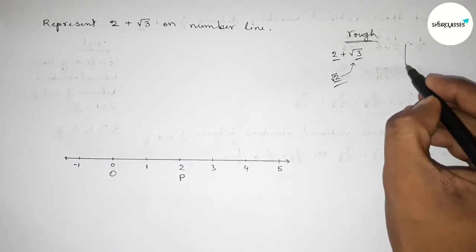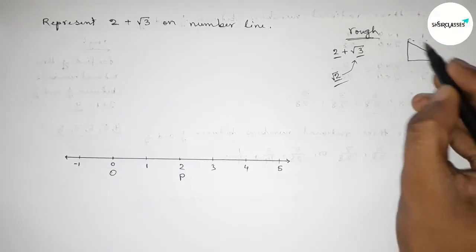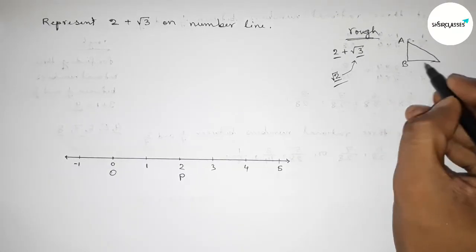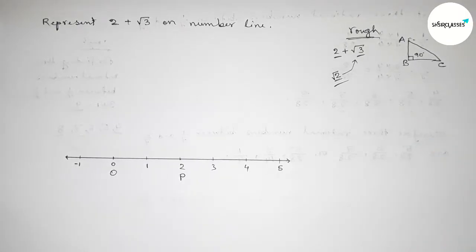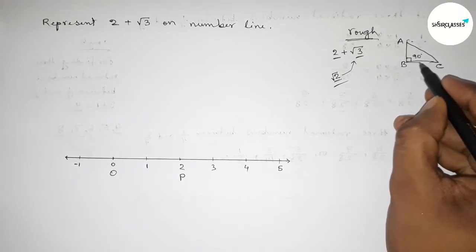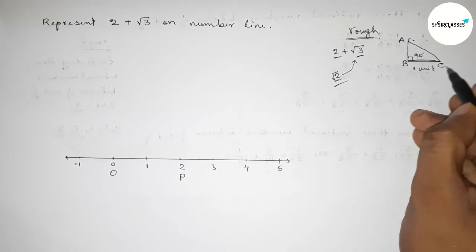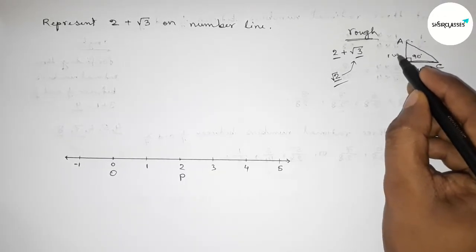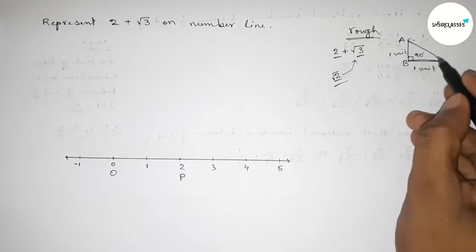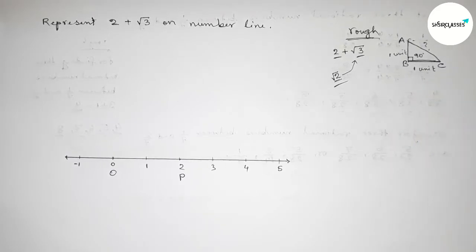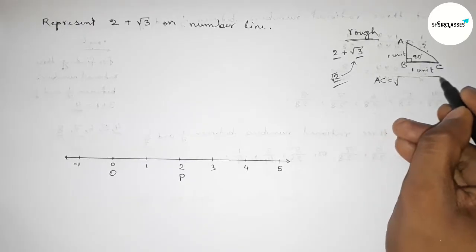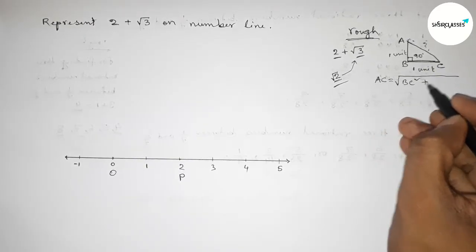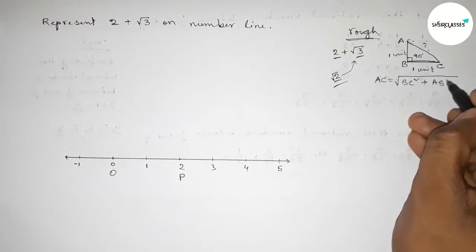Roughly discussing root 2: drawing a right angle triangle ABC, with the right angle at B, this is 90 degrees. If we take the base BC equal to 1 unit and the perpendicular AB equal to 1 unit, then what is the hypotenuse? By Pythagoras' theorem, hypotenuse AC equals root over BC squared plus AB squared.